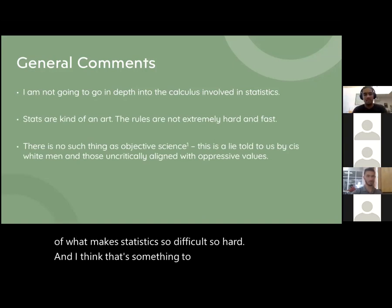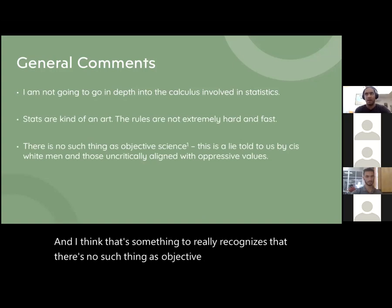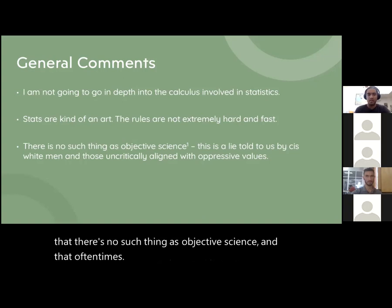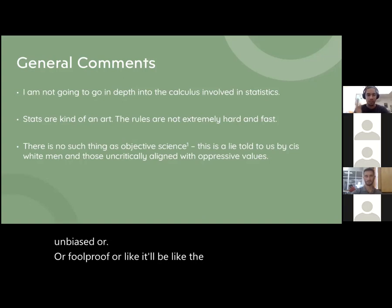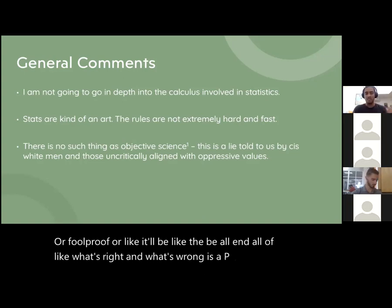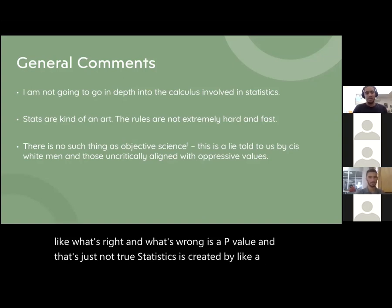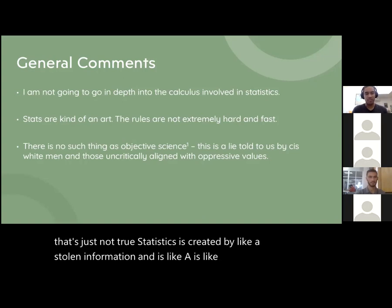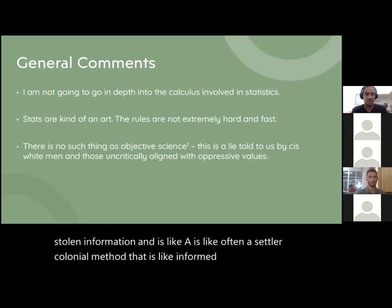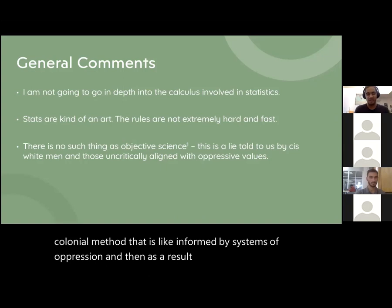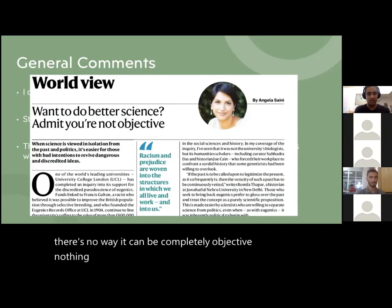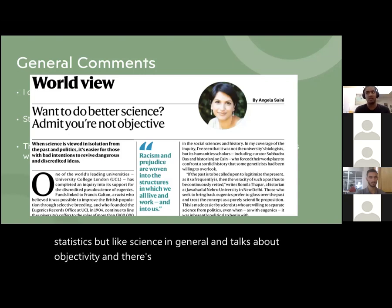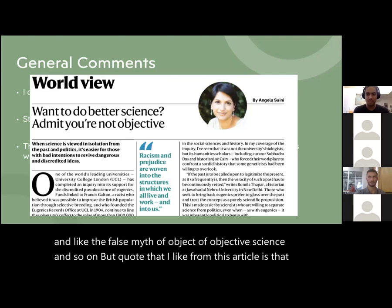Something really important to recognize is that there's no such thing as objective science. Institutions and people will often say that a statistic is unbiased, foolproof, or that a p-value is the be-all end-all of what's right and wrong. That's just not true. Statistics is created by and often a settler colonial method informed by systems of oppression, and as a result, statistics is biased because there's no way it can be completely objective. Nothing is.